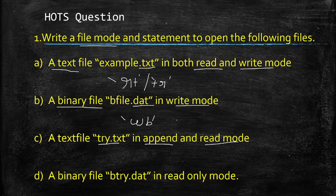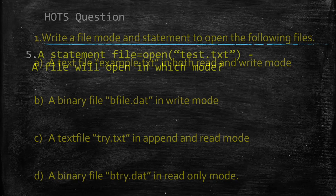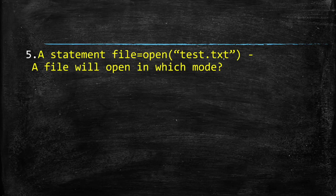These questions may come: what is the difference between write mode and append mode? Write mode overrides the existing content; append mode adds content at the end of the file. For append and read mode combined, you use a+ or +a. For a binary file try.dat in read-only mode, you use rb. If the statement is file = open('test.txt') with no mode given, by default the file opens in 'r' mode. If it were .dat, the default would be rb.